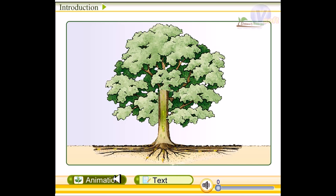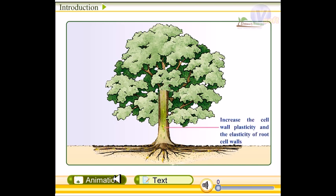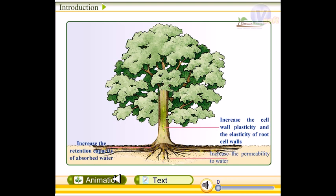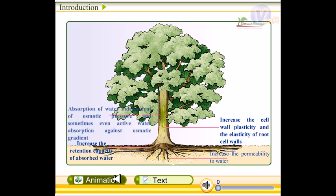The ways plant hormones act inside the plant are shown on the screen. It increases the cell wall plasticity and the elasticity of the root cell walls. Secondly, it increases the permeability to water, the retention capacity of absorbed water, absorption of water independent of osmotic pressure, and sometimes even active water absorption against the osmotic gradient.